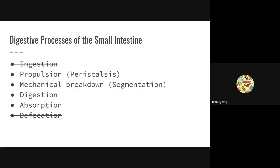What happens inside the small intestine? Pretty much everything. Propulsion continues through peristalsis just like in the esophagus, where areas contract to push food forward. We also have mechanical breakdown through segmentation, where random areas contract to break food into smaller pieces. We have digestion because of the major duodenal papilla — all those pancreatic enzymes and bile — and absorption through the circular folds, villi, and microvilli.